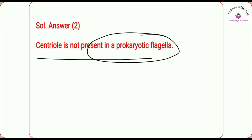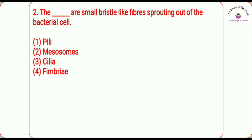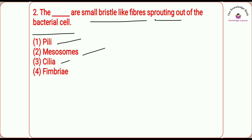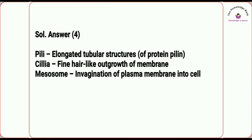Question number two: 'Dash' are small bristle-like fibers sprouting out of the bacterial cell — from where are they sprouting? The options are: pili, mesosomes, cilia, and fimbriae. The correct answer is fimbriae. Fimbriae are small bristle-like fibers sprouting out of the bacterial cell. Pili are elongated tubular structures made of protein, and cilia are fine hair-like outgrowths of the membrane.